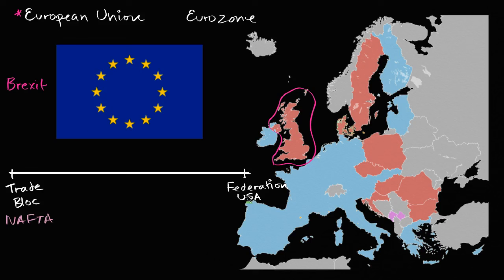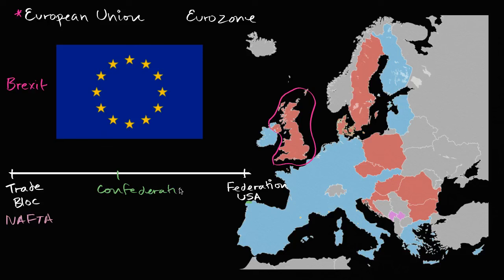Each of those states is semi-autonomous — they have their own governor, their own legislature, their own courts, and their own laws. But there is also a federal government: a federal army, federal courts, a president, and a federal legislature. They are so integrated as to be one country. In between a trade block and a federation, you'll sometimes hear words like confederation or confederacy. This is a more loose term — there's not a strict definition — but it's generally viewed as looser than a federation, where member countries can opt in or opt out and may be integrated in some ways but not others.